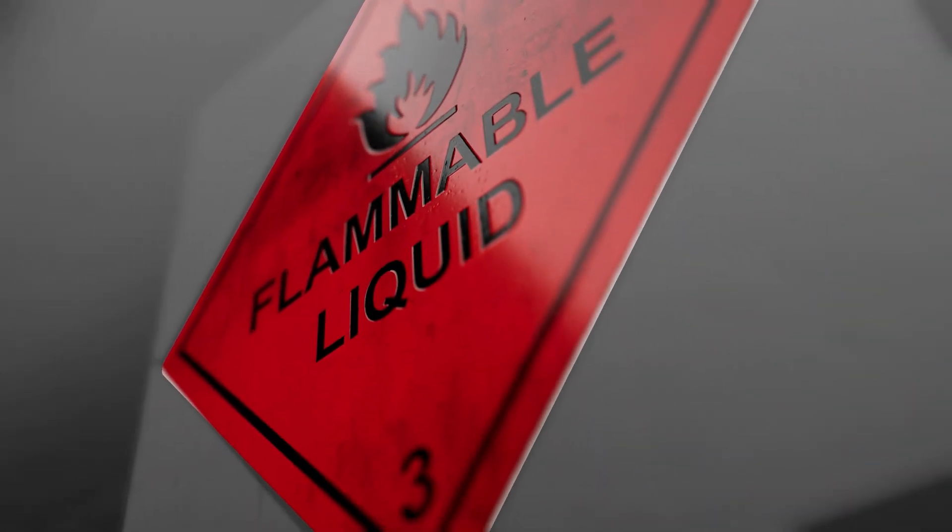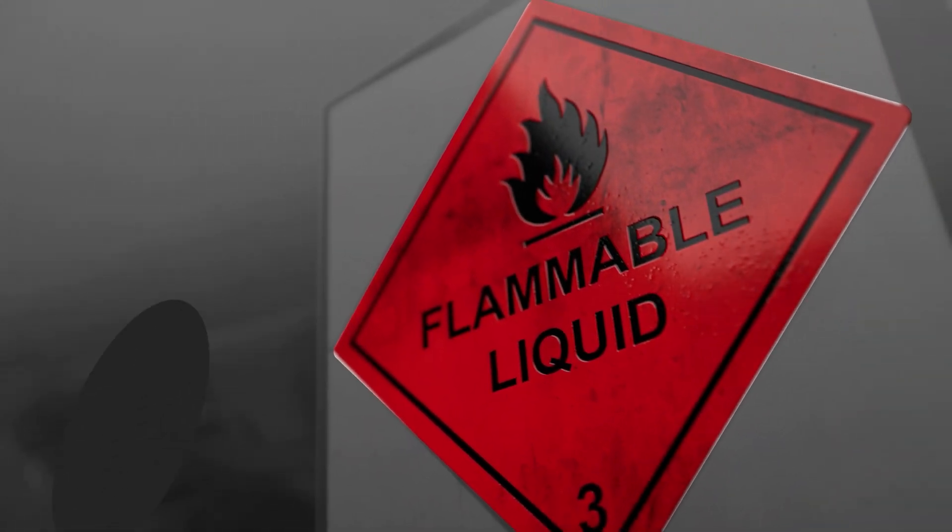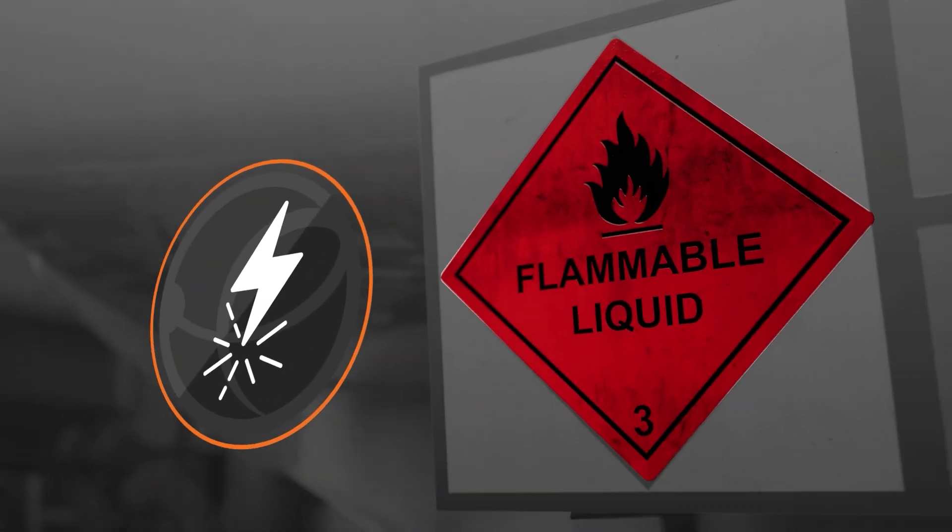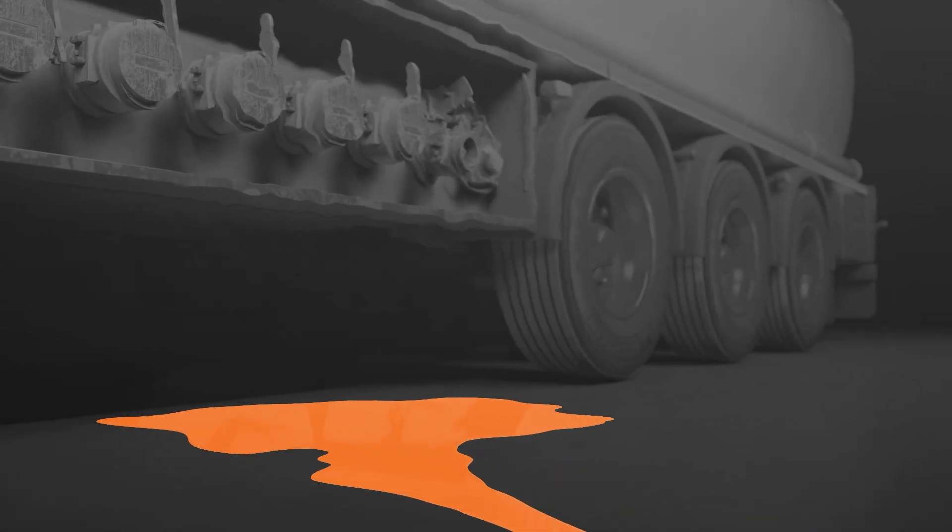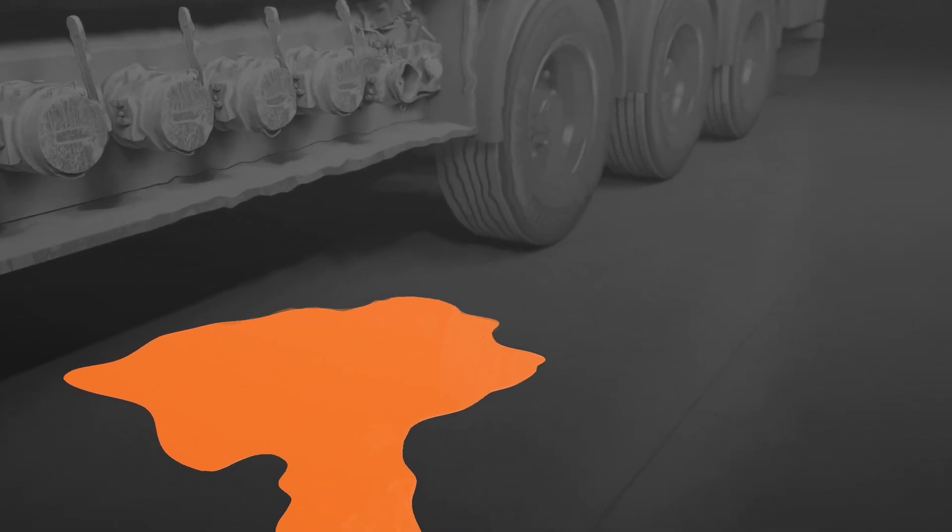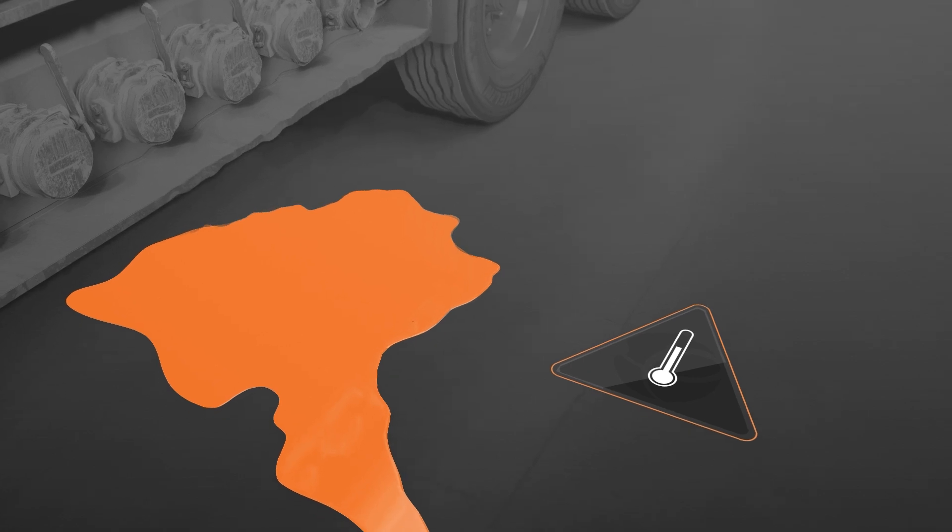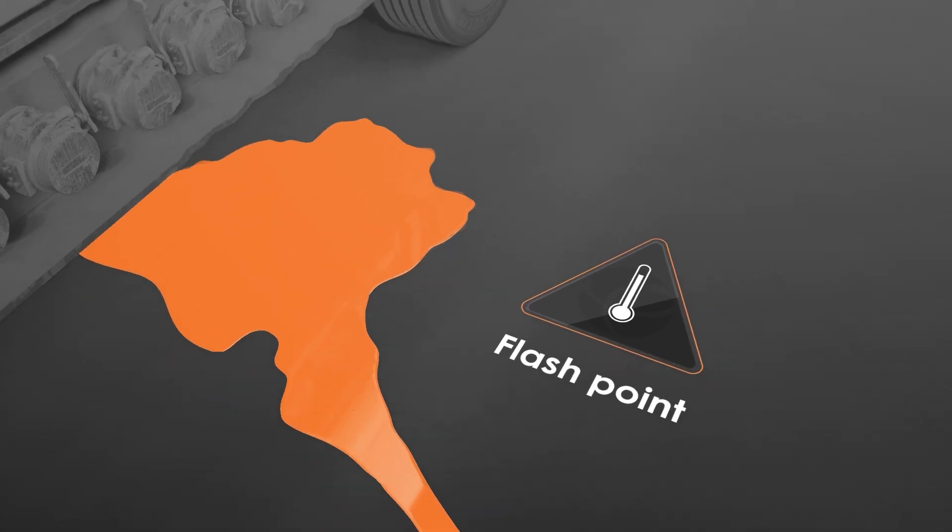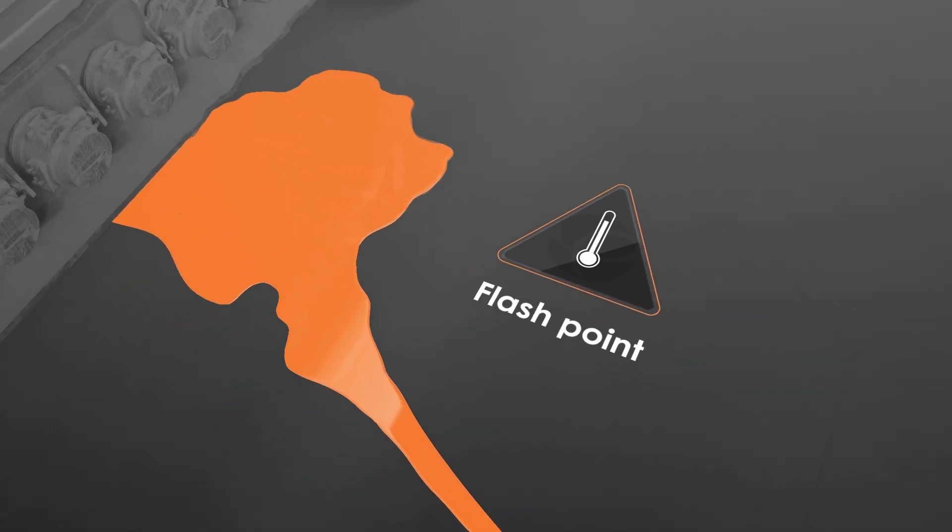A flammable material, usually a liquid or a gas, is one which only requires oxygen and a simple ignition source like a static discharge to make it burn. Liquids themselves don't burn. They first have to be converted to a vapor. The temperature at which a substance will produce enough vapor for it to ignite is known as its flash point, and the flash point varies from substance to substance.